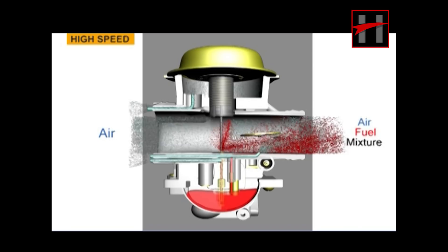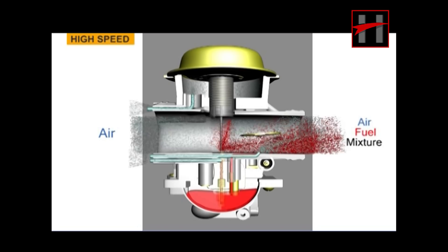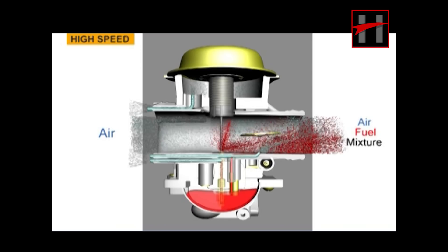The lower chamber of the diaphragm is at atmospheric pressure. Due to the pressure difference between the upper chamber and the lower chamber of the diaphragm, the diaphragm along with the piston and jet needle is lifted up. This generates clearance between the jet needle and the needle jet, which results in the flow of the required air-fuel mixture to the engine.